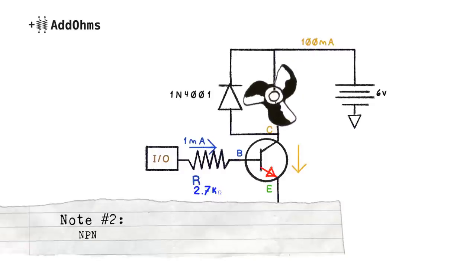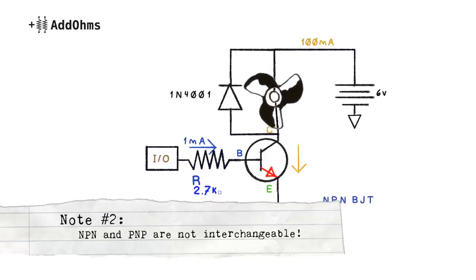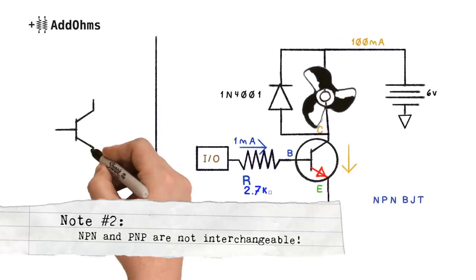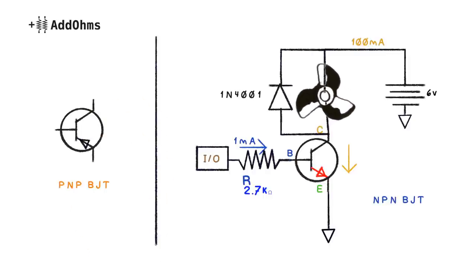Second, this circuit, as drawn, only works with an NPN BJT. A PNP-type BJT works similar to the NPN, except that the diode junction is backwards, which means the circuit will behave differently. But that's a subject for another video.